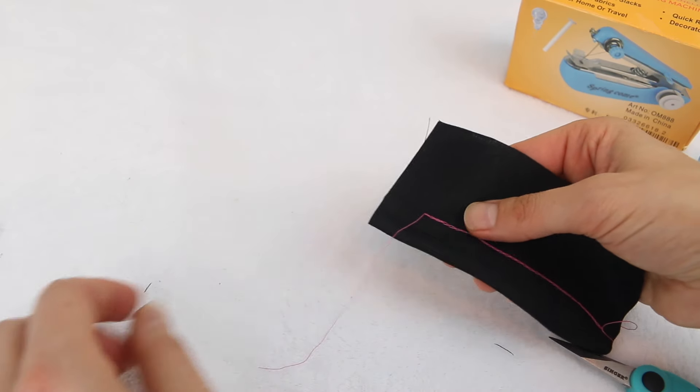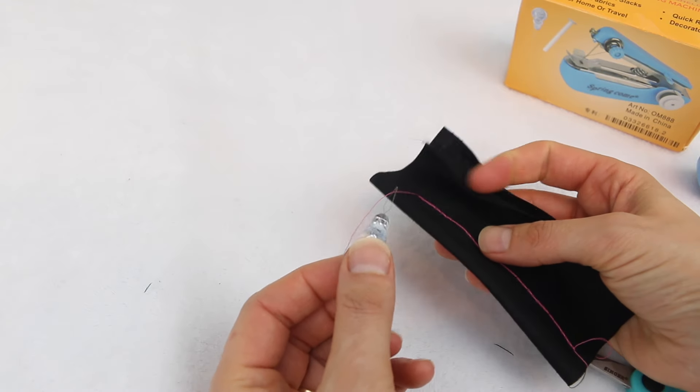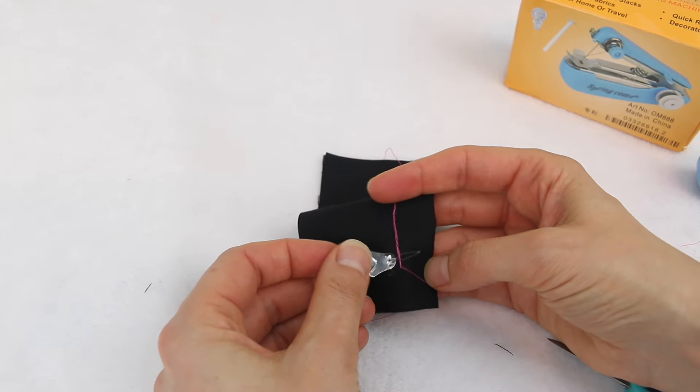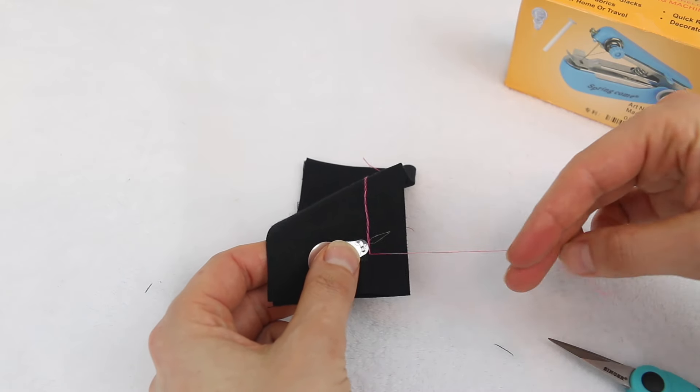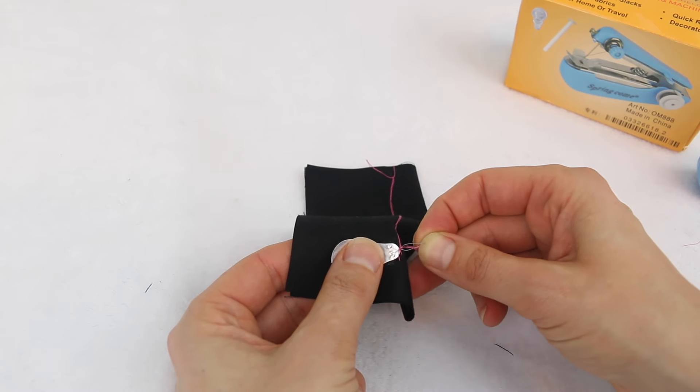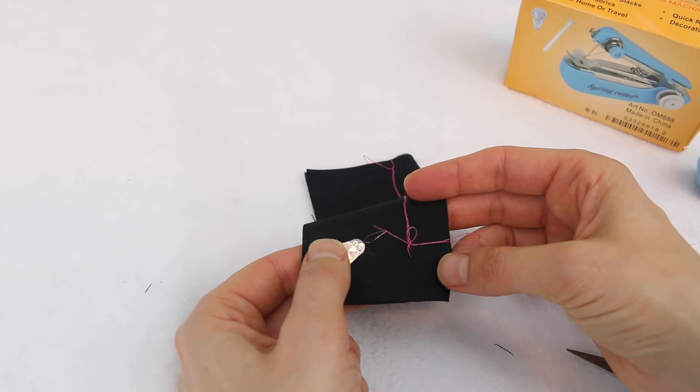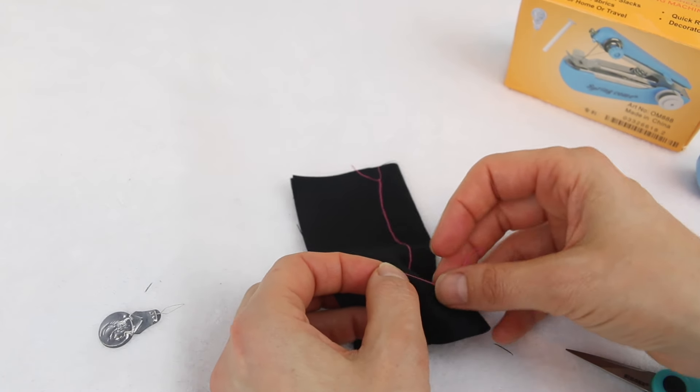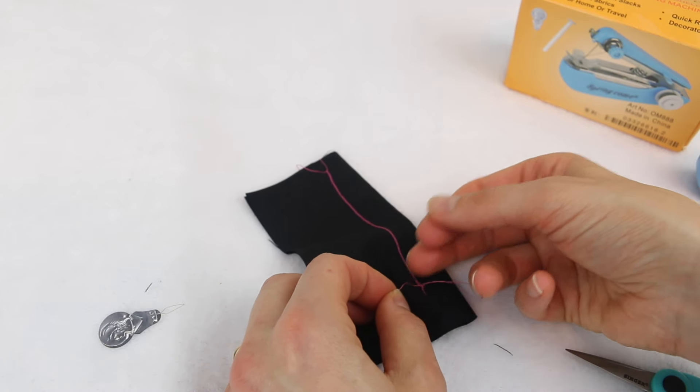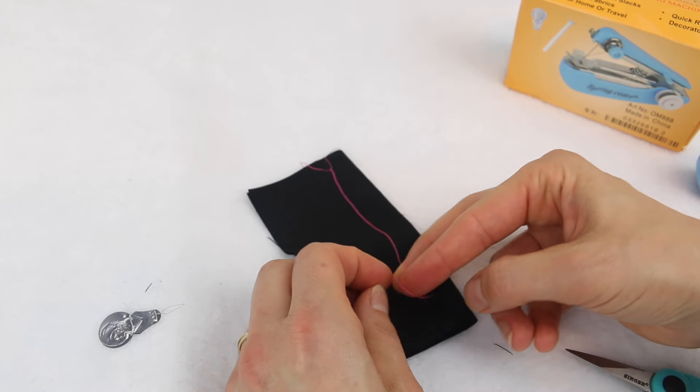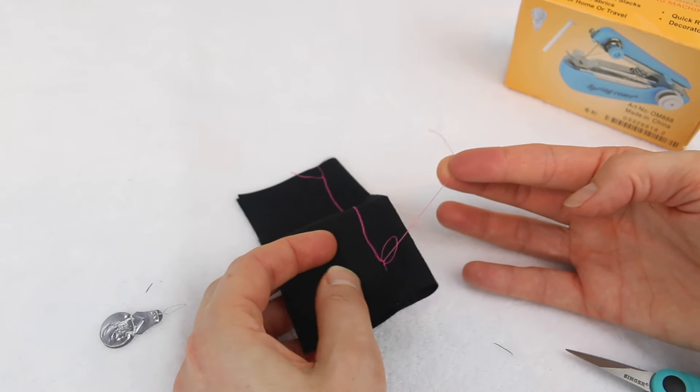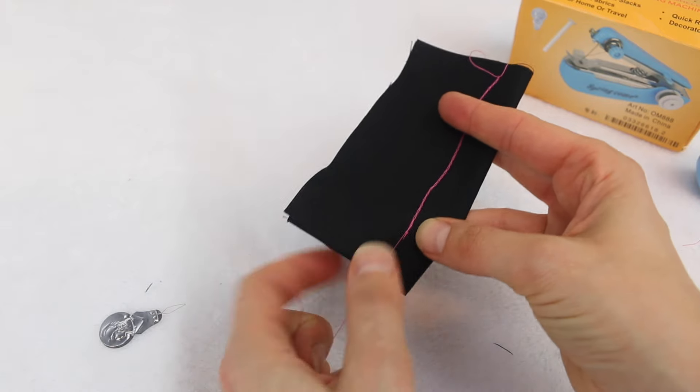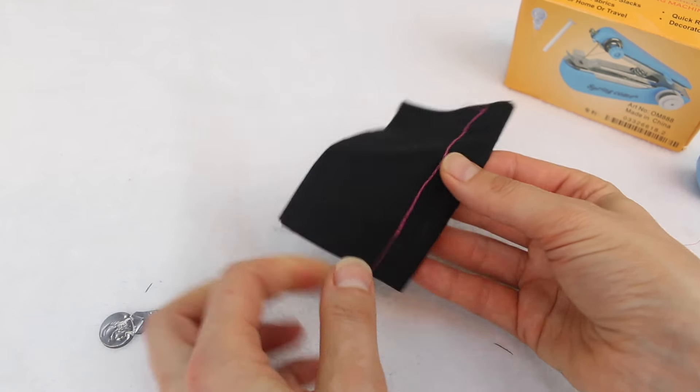Now, to make it extra secure, if you grab your needle threader from before, if you pass it under the last stitch and put your thread tail through there, and then pull it through. And don't pull it all the way through. Make sure you have a little loop left over. And you want to pass your thread tail through that little loop and pull it. And this should give your sewing some extra strength to hold in there.